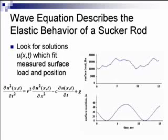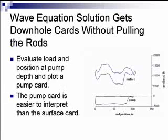One of the disadvantages of the Gilbert tool was that you had to pull the well to get your dynamometer card. That was costly, so the tool was not used a lot. But now you have a way of getting the downhole pump card from surface data without having to pull the well. These downhole pump cards are much easier to interpret — there are only a handful of different shapes, whereas there are infinitely many shapes of surface cards.